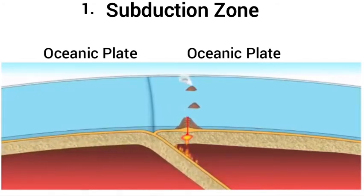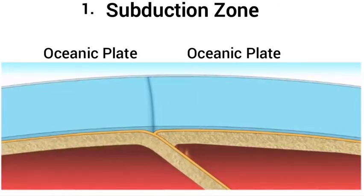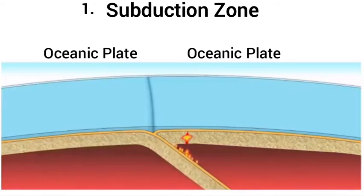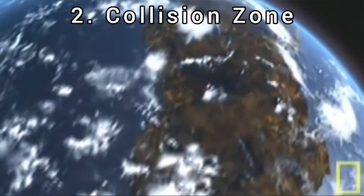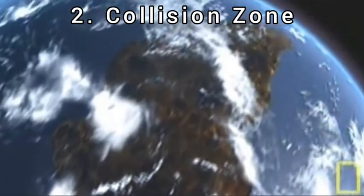We also have the oceanic-oceanic plate subduction margin. These are plate subduction zones that involve the convergence of two plates of similar density. An excellent example of such a zone includes the convergence between the Philippine plate and the Pacific plate.